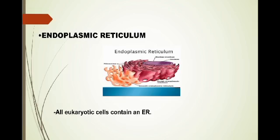The second part is the endoplasmic reticulum. All eukaryotic cells contain an ER. So endoplasmic reticulum is a network of membranes inside a cell through which proteins and other molecules move.